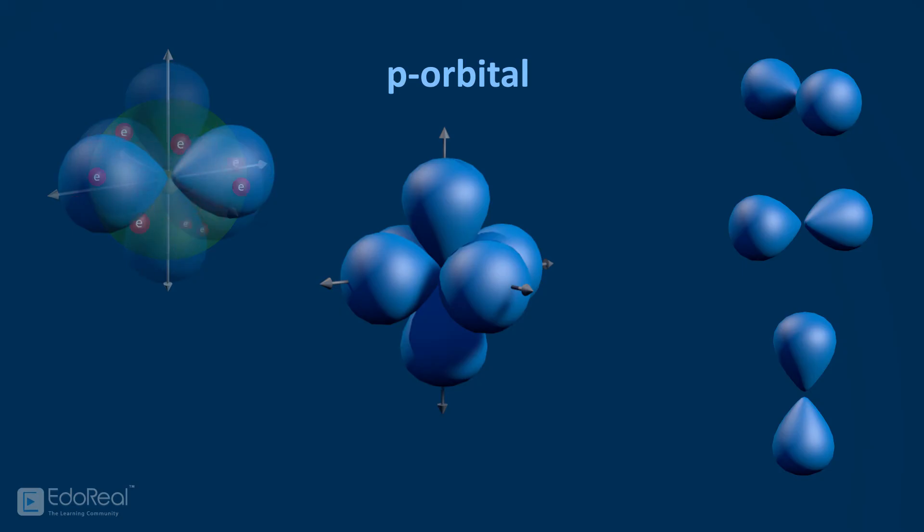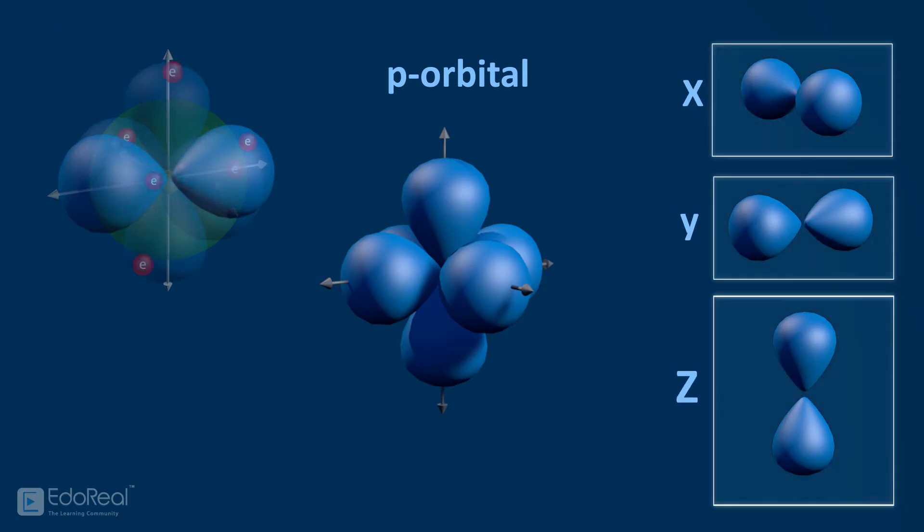As the three spaces are oriented in x, y, z directions, these are called px, py, pz orbital.